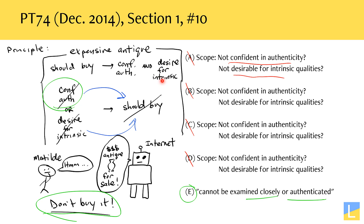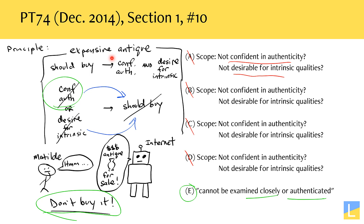The big takeaways from this problem are: make sure you understand what 'only if' means — it introduces a necessary condition — and make sure you understand that when you take the contrapositive of a conditional statement that has an 'and,' you have to change the 'and' to an 'or' as well as negate each of those terms.